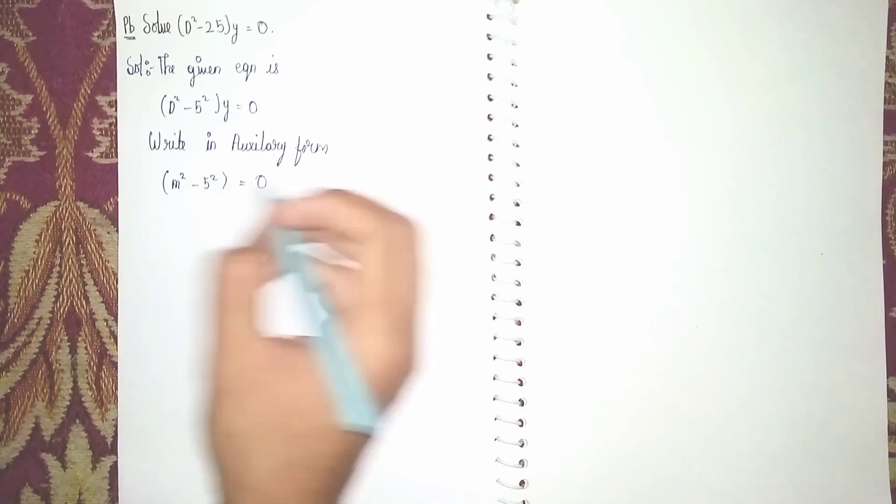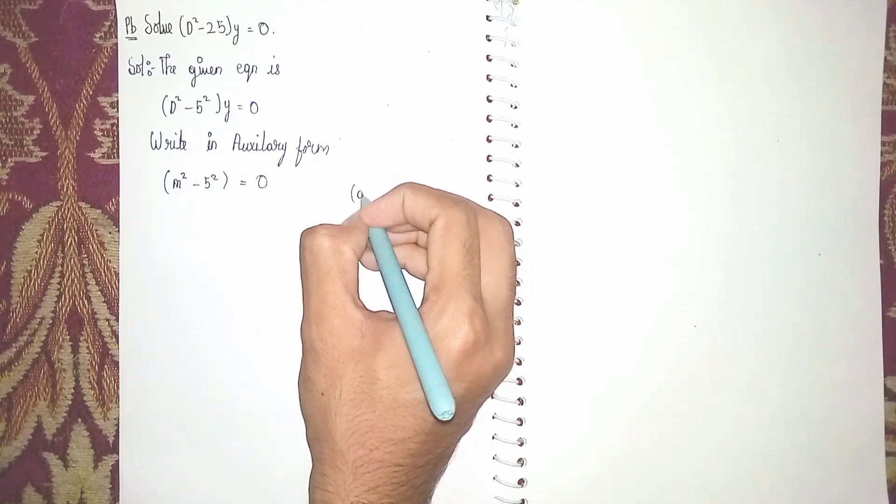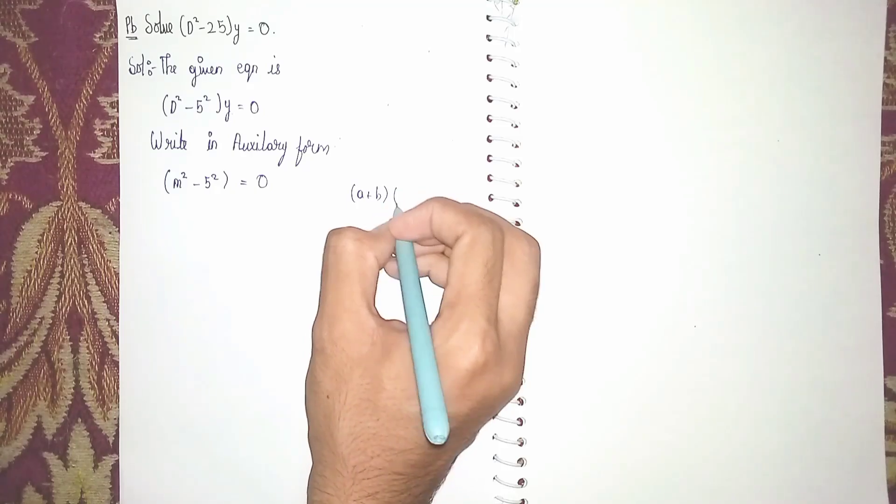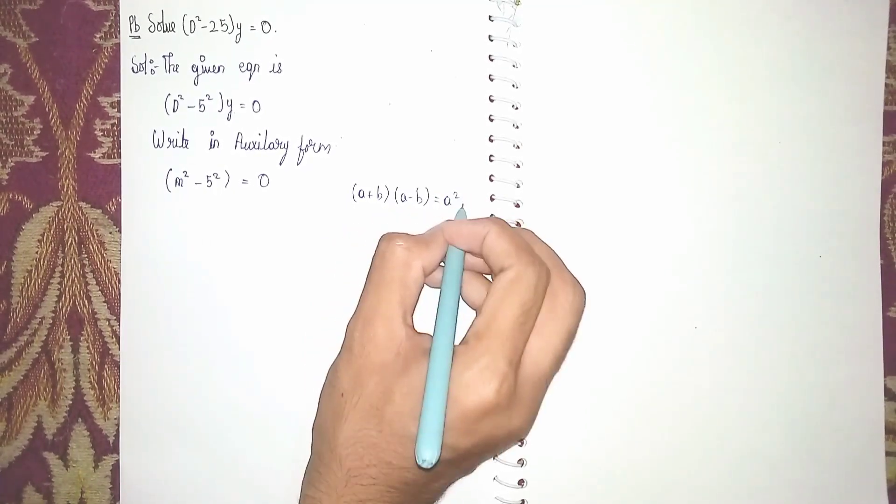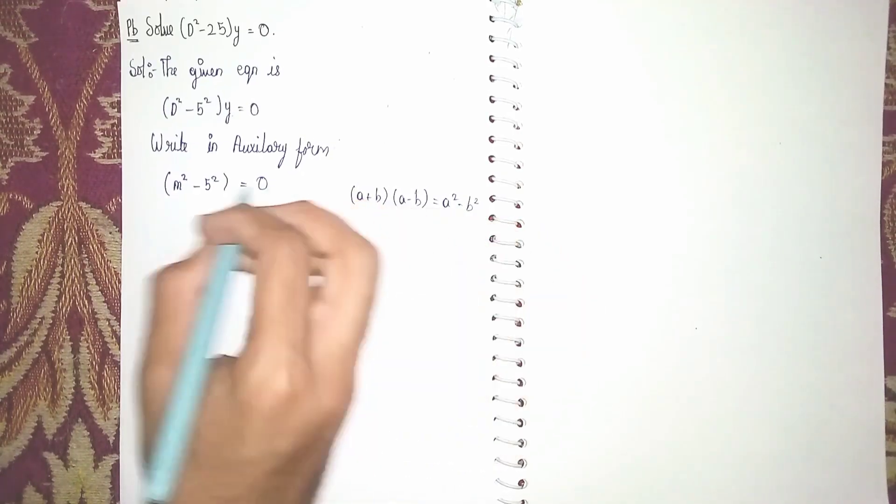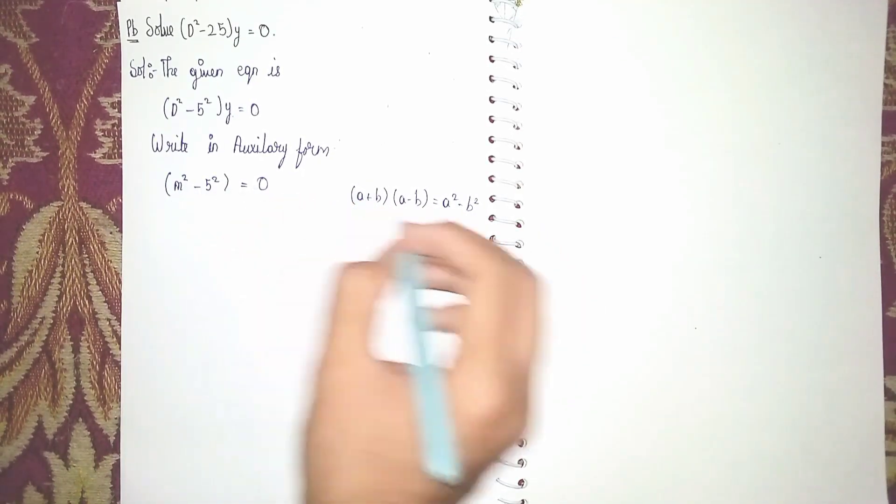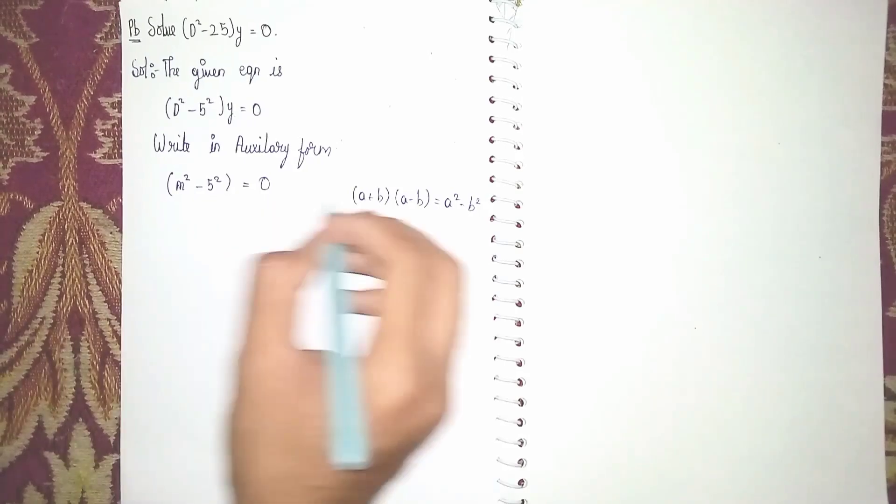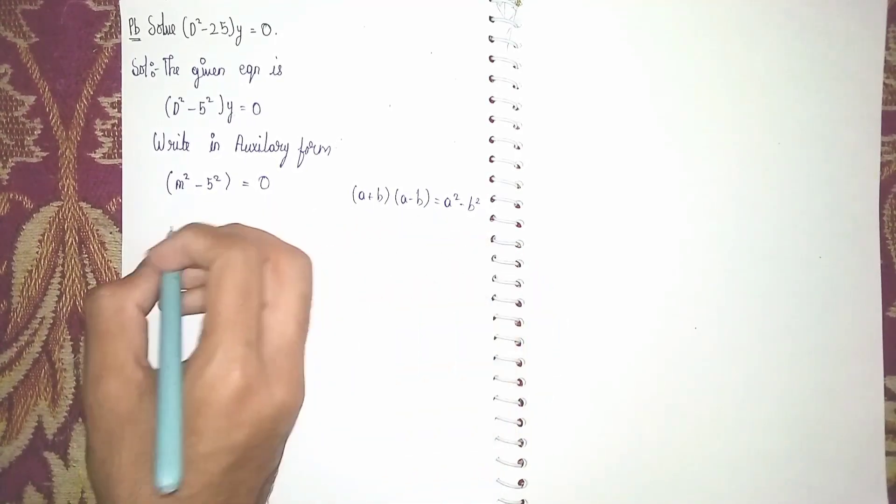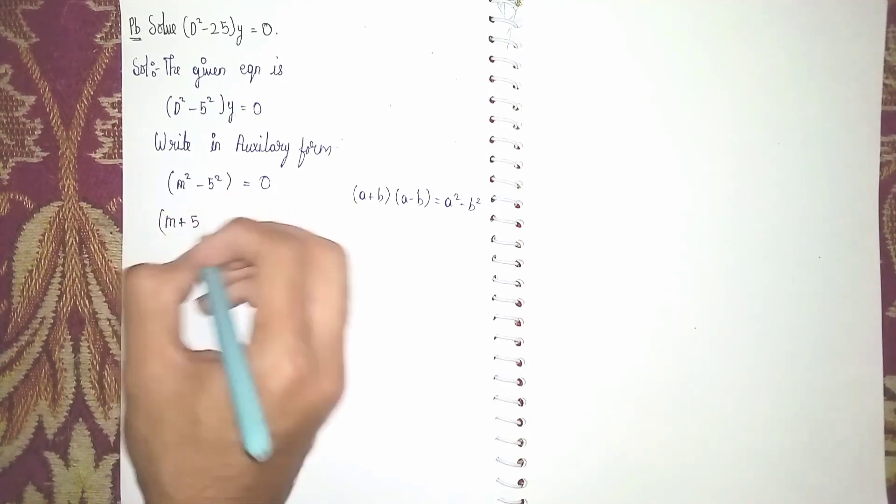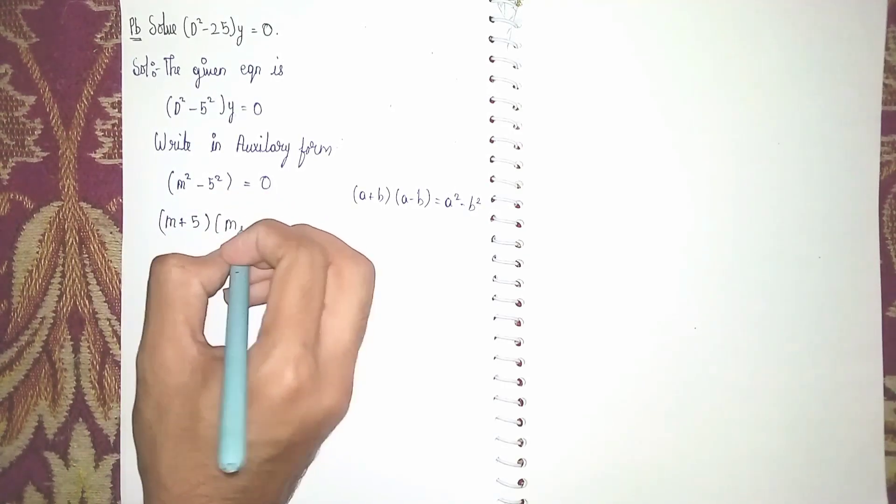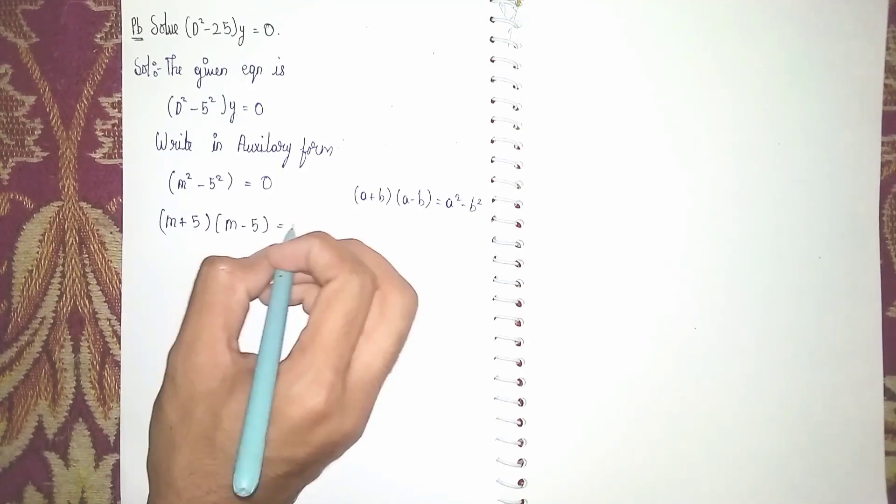Now see, it is in the form of a square minus b square, which is equal to a plus b times a minus b. So instead of m square minus 5 square, we can write m plus 5 into m minus 5 is equal to 0.